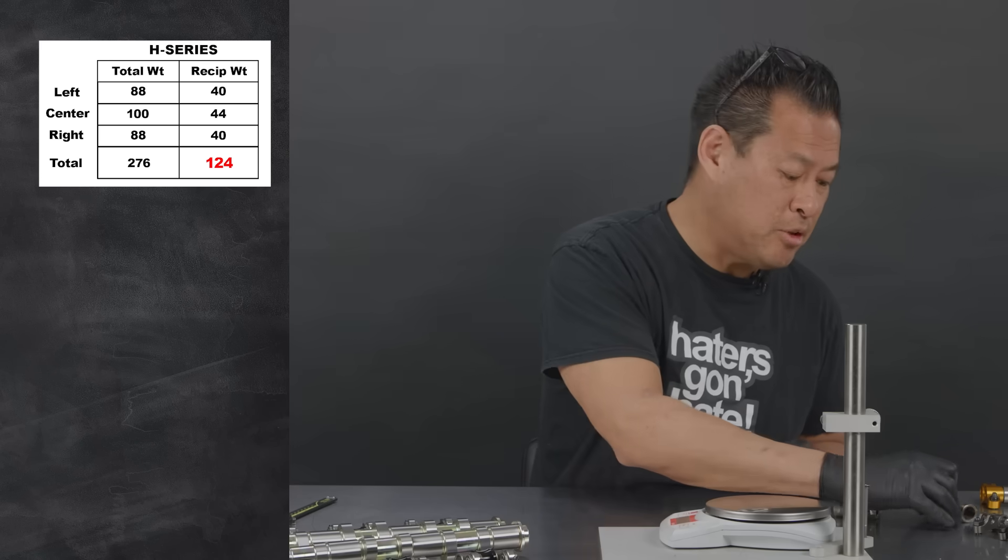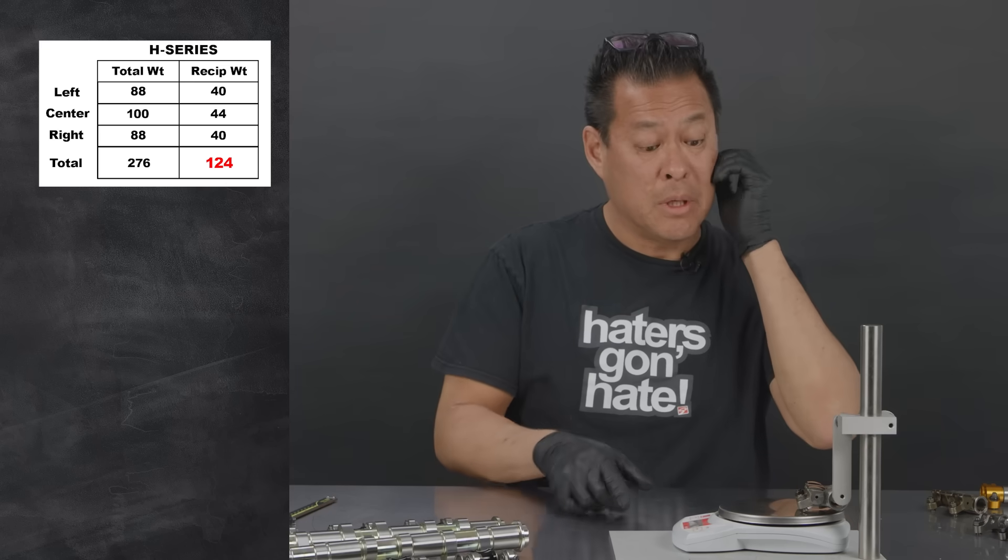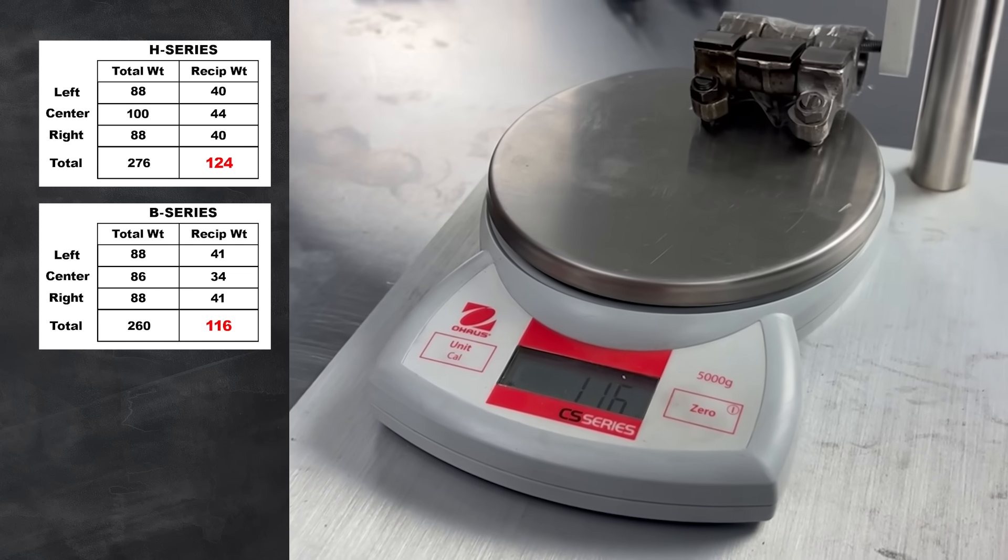So next let's do the B rockers. Let's see what we got, 10 grams lighter. The reciprocating mass for the B rockers is 116 grams.